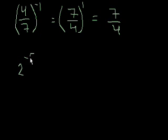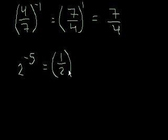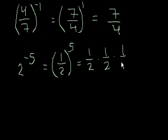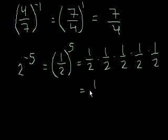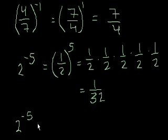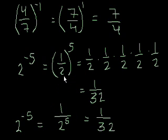Let's do more problems. 2 to the negative 5. Once again, we take the reciprocal of 2, and we say 1 over 2 raised to the fifth power. That equals 1 half times 1 half times 1 half times 1 half times 1 half, and that equals 1 over 32. Another way we could have viewed 2 to the negative 5 is to say it equals 1 over 2 to the fifth. We know that 2 to the fifth is 32, so that would have been the same thing. Two ways to do it — essentially just changing the order of when you flip versus when you calculate the exponent.